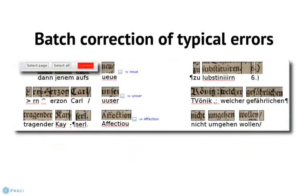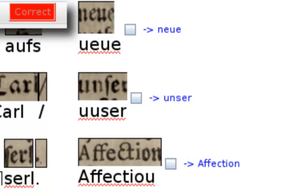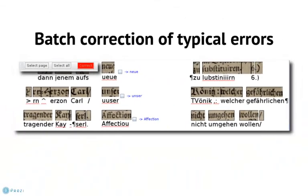The second, and in my opinion even more powerful batch mode, is one that allows correcting not on the basis of a given word, but of a particular recognition error. As I said before, OCR often has problems recognizing certain characters correctly. Here you see words where an N was recognized as a U. And again, you just have to check the list for whether all errors were recognized by the profiler correctly, select some or all of them, and correct them with just a couple of clicks. That way you can work your way through the whole text and correct it very efficiently.